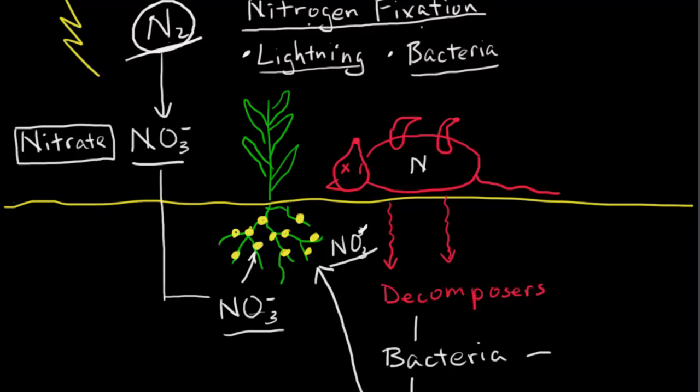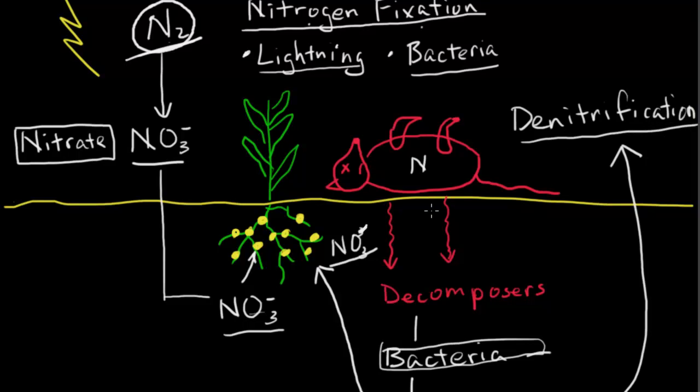And finally, this N2 can either go to the plant roots, or it can return into the atmosphere. This process, with the help of bacteria, is called denitrification. So denitrification is when bacteria changes these nitrogen compounds into N2, and then it will go back into the atmosphere.